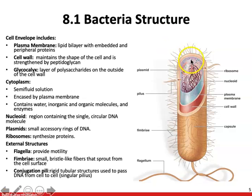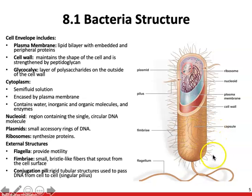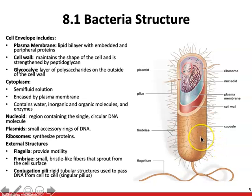Ribosomes synthesize proteins for the bacterial cell. External features include flagella, which provide motility, and fimbriae — bristle-like projections that help the bacteria adhere to surfaces, similar to velcro. Unlike cilia in eukaryotic cells, which beat back and forth to move the cell or surrounding fluid, fimbriae function as attachment structures.